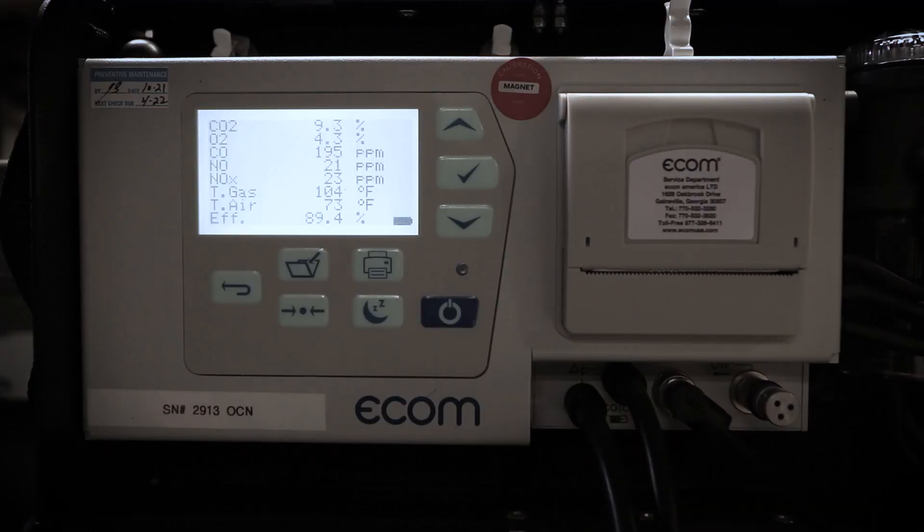For natural gas units, we want to set the CO2 on high fire between 9.1 and 9.3%. On propane units, the CO2 needs to be between 10.1 and 10.5%. Additionally, make sure the CO level is less than 200 parts per million.